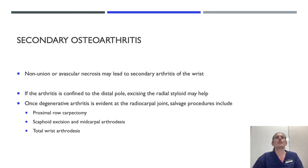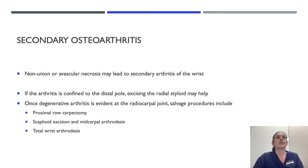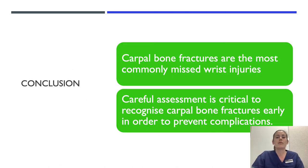Non-union and avascular necrosis may lead to secondary arthritis of the wrist. If the arthritis is confined to the distal pole, excising the radial styloid may help, but once degenerative arthritis is evident at the radiocarpal joint, salvage procedures include proximal row carpectomy, scaphoid excision and mid-carpal arthrodesis, or total wrist arthrodesis. In conclusion, carpal bone fractures are the most commonly missed wrist injuries, so careful assessment is critical to recognise them early, treat them, and prevent complications.